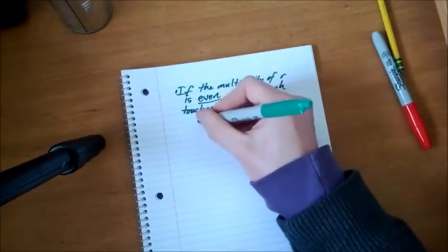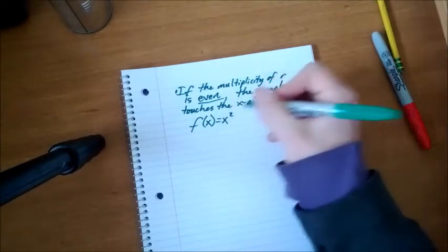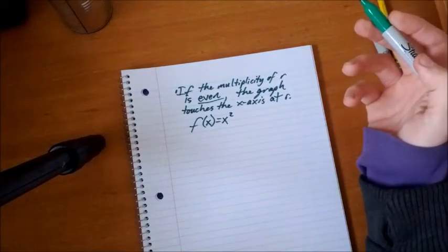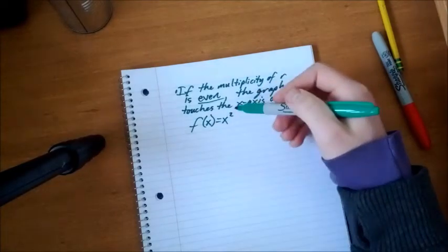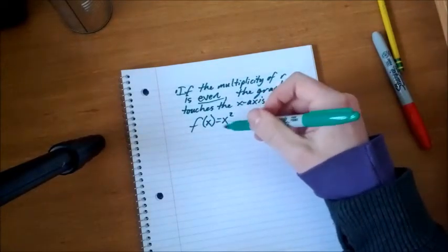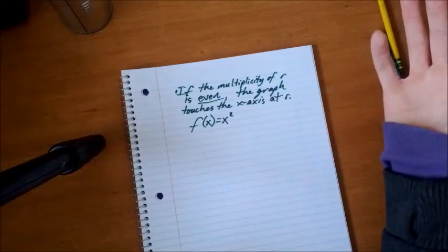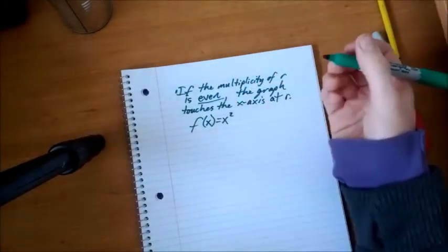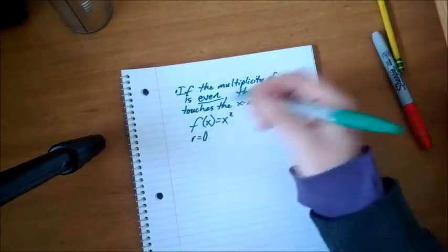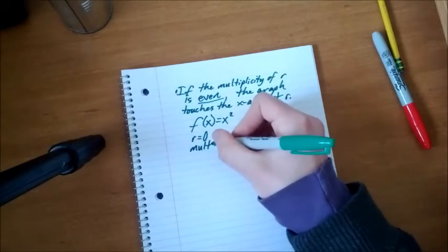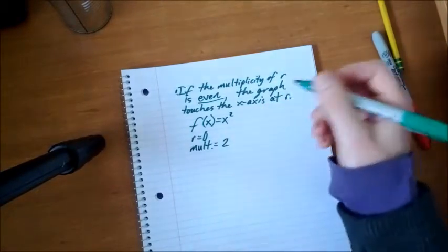For example, we can say we have the function f(x) = x². What is the multiplicity of x²? Well, actually, what is the real zero here? To set f(x) or x² equals zero. What squared is zero? Zero squared is zero. Zero times zero is zero. So we have r equals zero, and its multiplicity is two. It's squared, so the multiplicity is two.